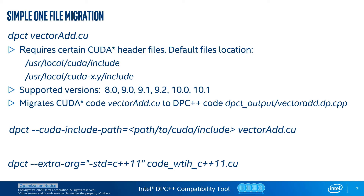Now let's take a look at how a basic invocation of the tool usually looks. By basic we mean a simple one-file migration where we don't need to care about additional options like makefiles and compilation databases. To migrate applications, the tool requires certain CUDA header files which are not provided with the tool. You can make them available by pointing to them with the CUDA include path option in the command line. If this option is not specified, the Compatibility Tool looks for CUDA header files in some default paths. Currently, the tool supports the migration of programs implemented with the CUDA versions listed on the slide, and the list of supported versions may be extended in the future.